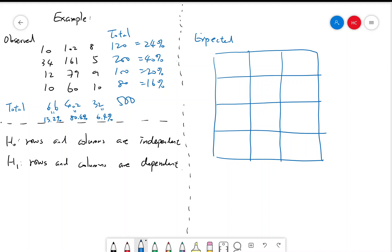So to calculate the expected values of the entries, for example, if we want to do the first row, first column, first row is 24%, first column is 13.2%, so it's 24% times 13.2%. That's 3.168%, which converts to 15.84 in counts. So you multiply by 500 to get a count.